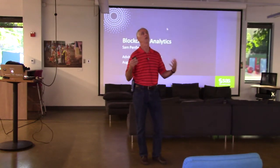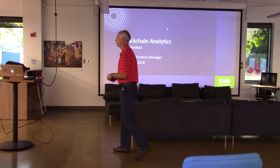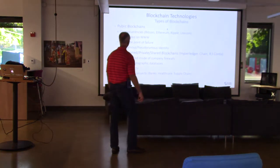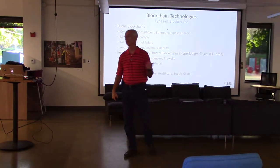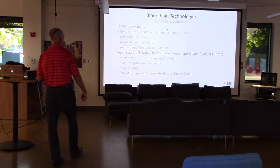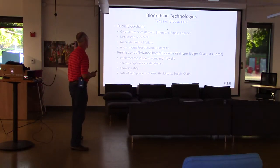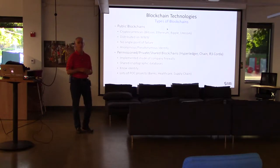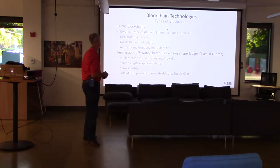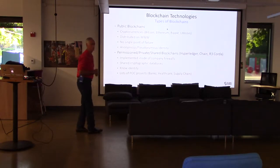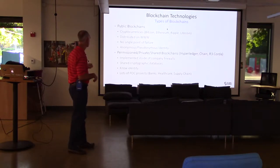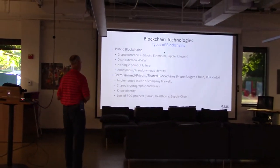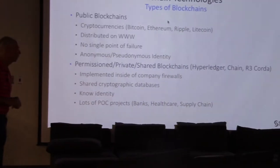So I started taking a look at blockchains in general and separated them out into categories: public blockchains, which are cryptocurrencies, and then what we'll call private or permissioned blockchains — Hyperledger chains, R3 Corda, and so on. I wanted to look at which ones we'd really play well with. On the regulatory side, public blockchains would come to us for anti-money laundering and fraud detection. But the real place I felt SAS could connect into was the permissioned side — implemented inside firewalls with known identity. There are lots of proof-of-concept projects going on in healthcare, supply chain, and things of that nature.